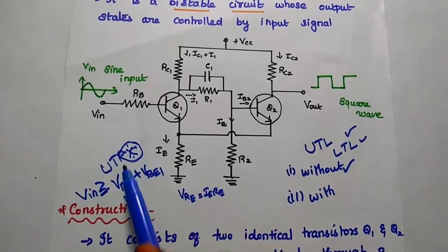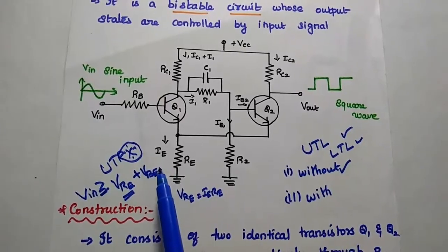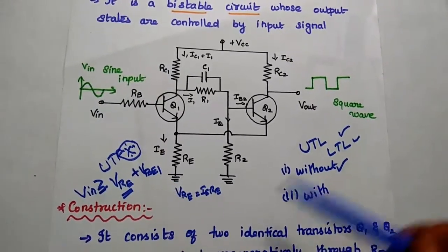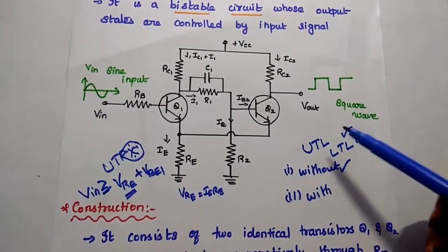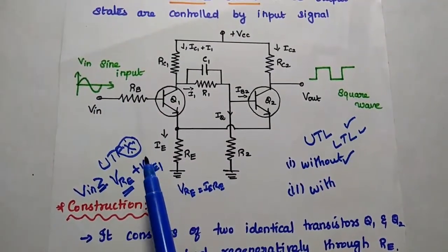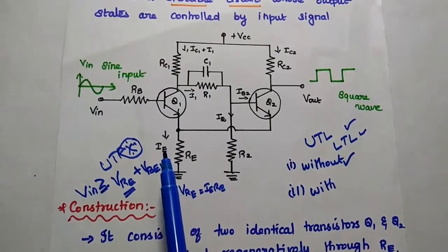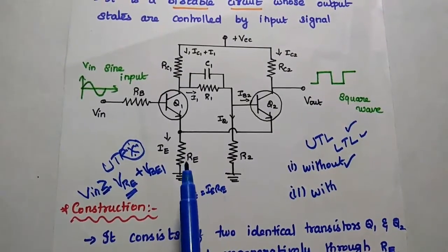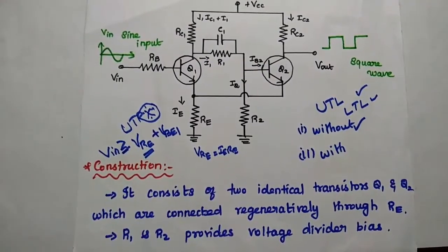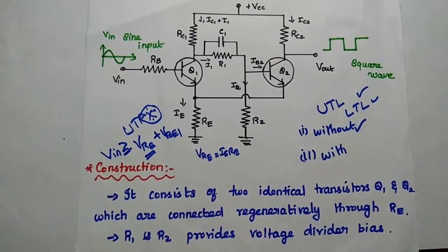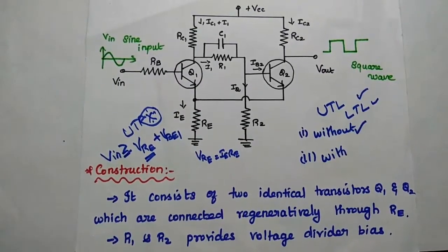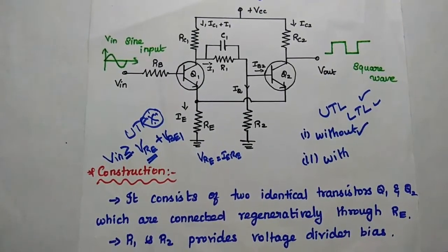The upper trigger point is where Q1 starts conducting. As Q1 starts conducting, Q2 is driven into the cutoff region. So with an input signal, Q1 starts conducting and Q2 is in the cutoff region. The Schmitt Trigger consists of two identical transistors Q1 and Q2 connected regeneratively through the emitter resistance.